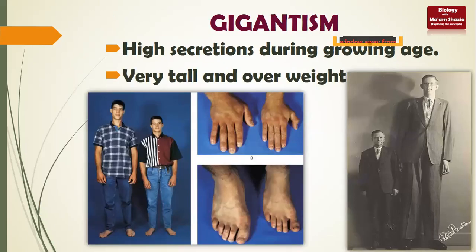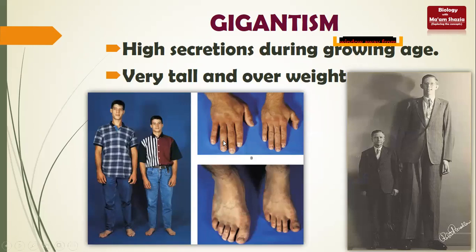Gigantism is caused by high secretions of somatotrophin during the growing age - within 18 years. A very high amount of somatotrophin during the growing period results in a very tall and overweight person.